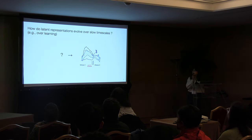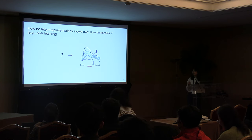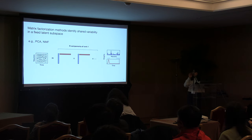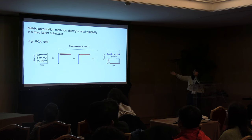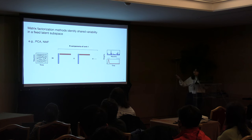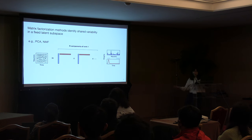Something I've been interested in lately is thinking about how these latent representations can evolve over slow timescales — for example, online learning. I realize there are actually not very many methods attacking this specific question. Starting with the most basic method — matrix factorizations like PCA — the idea is that you take your data matrix of neurons by time and write it as a sum of rank-one matrices, giving a low-rank approximation. If you want to look over slow timescales, one thing you can do is just make a very long matrix.